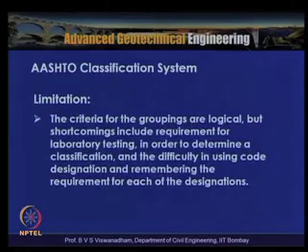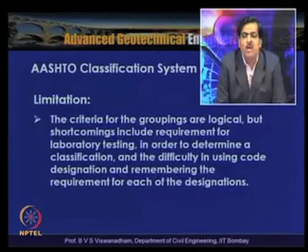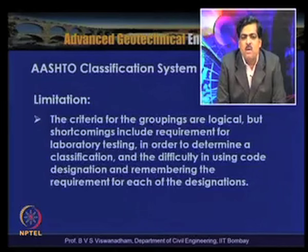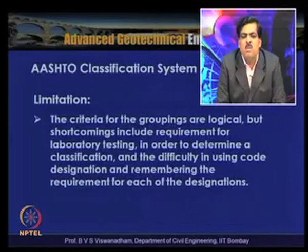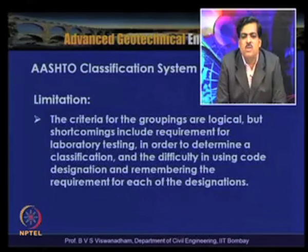The limitations of the AASHTO classification system are that the criteria for the groupings are logical but shortcomings include the requirement for laboratory testing to determine a classification, and the difficulty in using the code designation — the group symbols are difficult to remember, and without looking up the interpreted results it is not possible to understand the behavior of the soil.